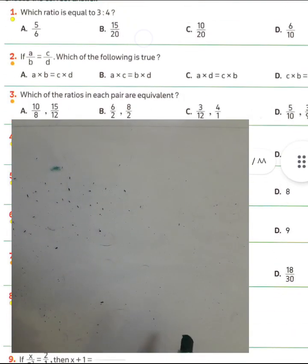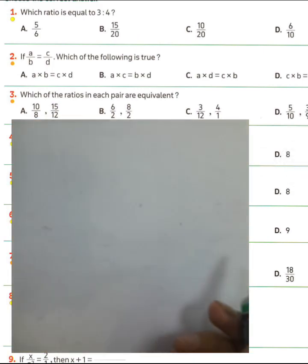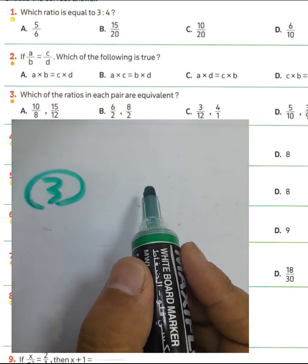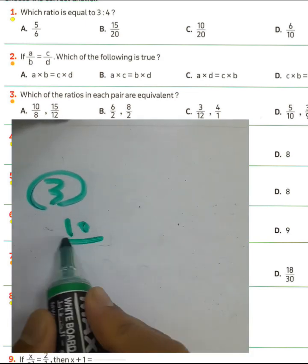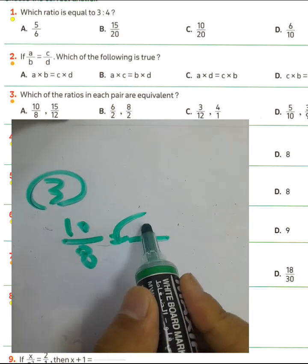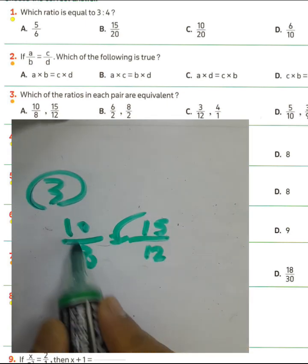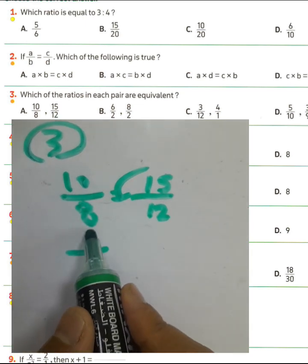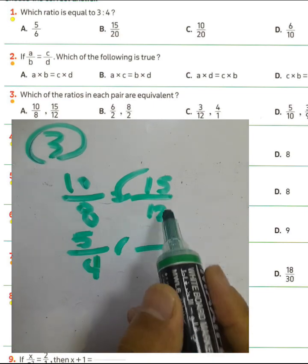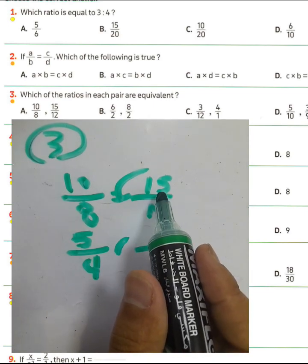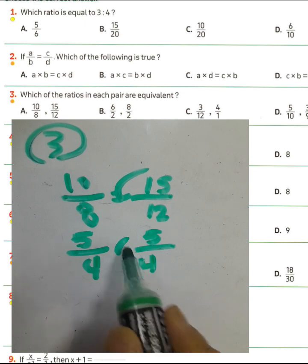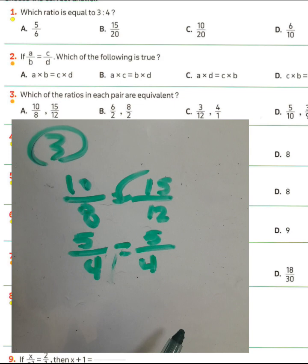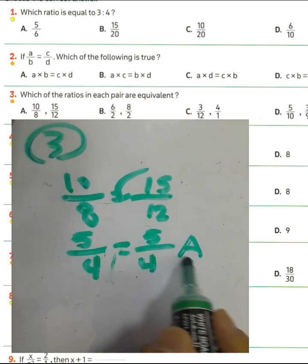Number three: which of the following ratios are equivalent? First, 10 over 8 and 15 over 12. We can simplify 10 over 8 by dividing by 2: 10 divided by 2 equals 5, and 8 divided by 2 equals 4. Then 15 divided by 3 equals 5, and 12 divided by 3 equals 4. Then they are equivalent. The result will be letter E for question number three.